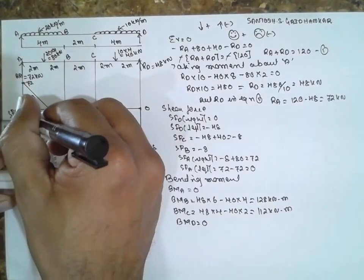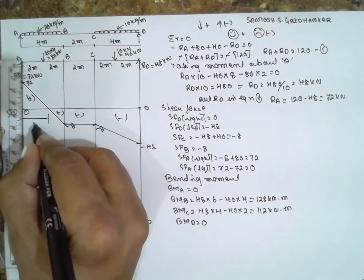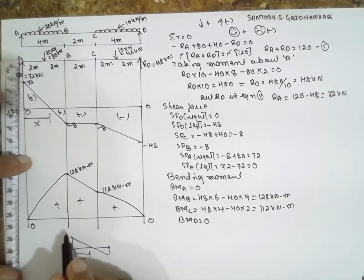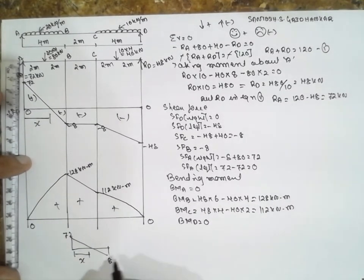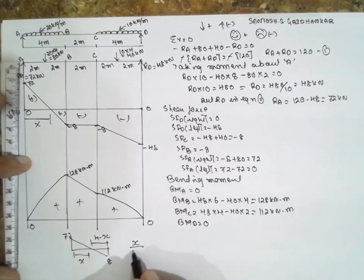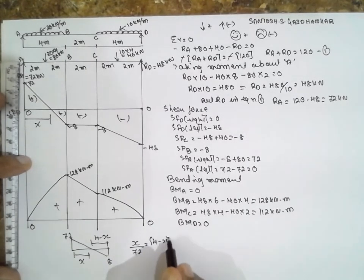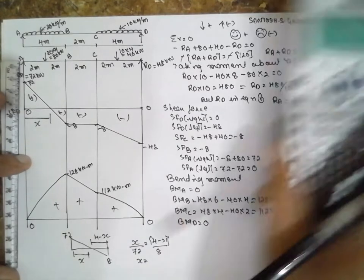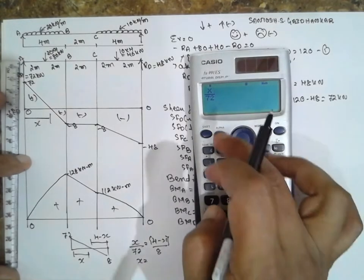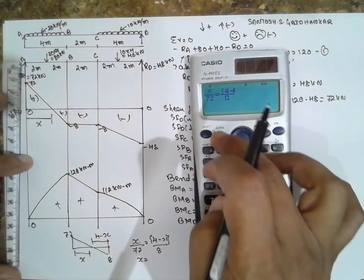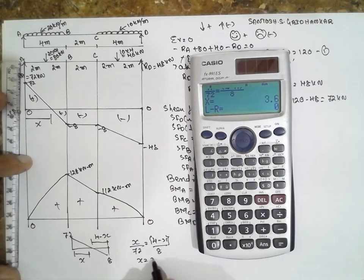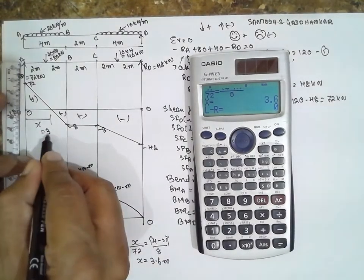To find out the distance x here, redraw that part. This is x, 72, 8, don't consider the minus sign. This value will be 4 minus x. x divided by 72 equals 4 minus x divided by 8. The x value will be 3.6 meters. This is 3.6 meter value.